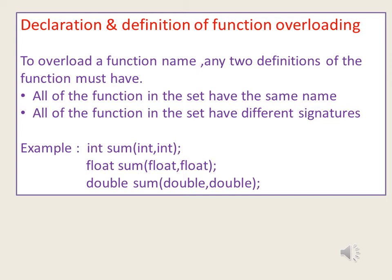Function overloading is invoked automatically by the compiler. In this example, the function sum is overloaded. The first function sum takes two integer arguments, the second takes two float arguments, and the third takes two double arguments. We observe that all functions have the same name — that is, sum — and all have different signatures: int/int, float/float, and double/double.